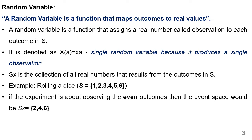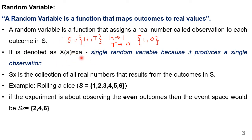Let us take an example. I have a coin and I am going to toss it. When I toss this coin, I am going to get two outcomes. I can define the sample space as a set of head and tail. If I assign 1 to head and 0 to tail, then I can put this as {1, 0}. A random variable is a function that assigns a real number called an observation to each outcome in the sample space. It is denoted as X(a) = xa. It is a single random variable because it is producing only one observation.